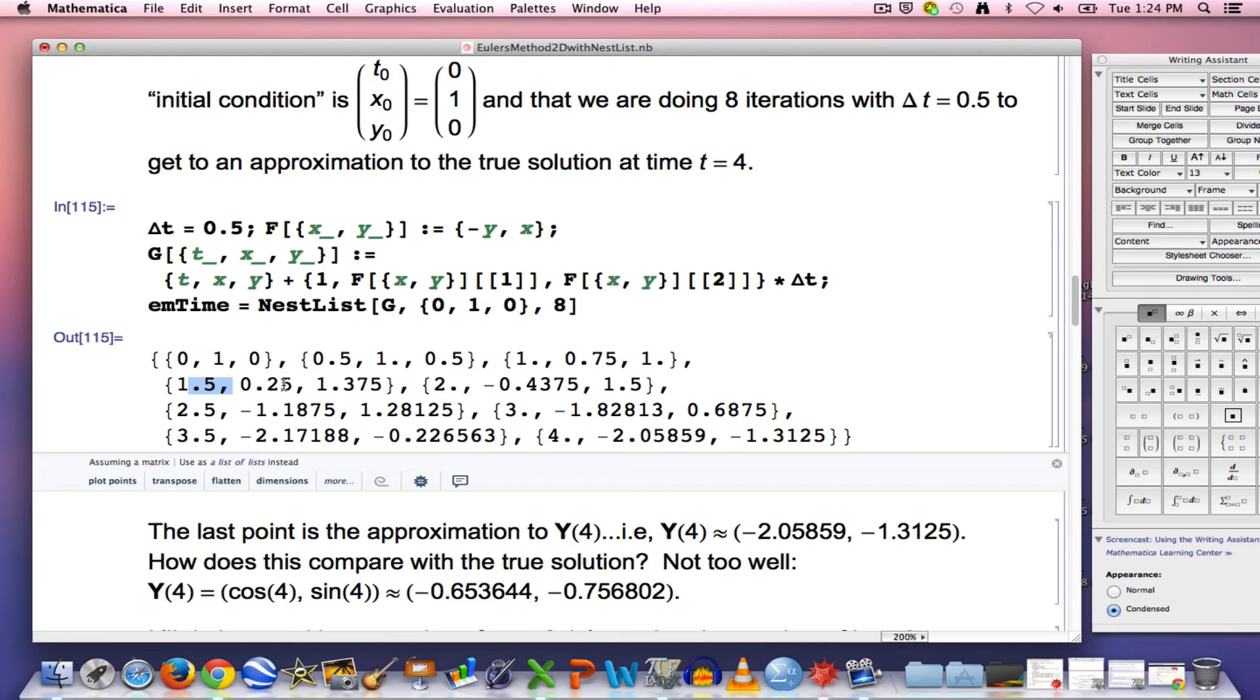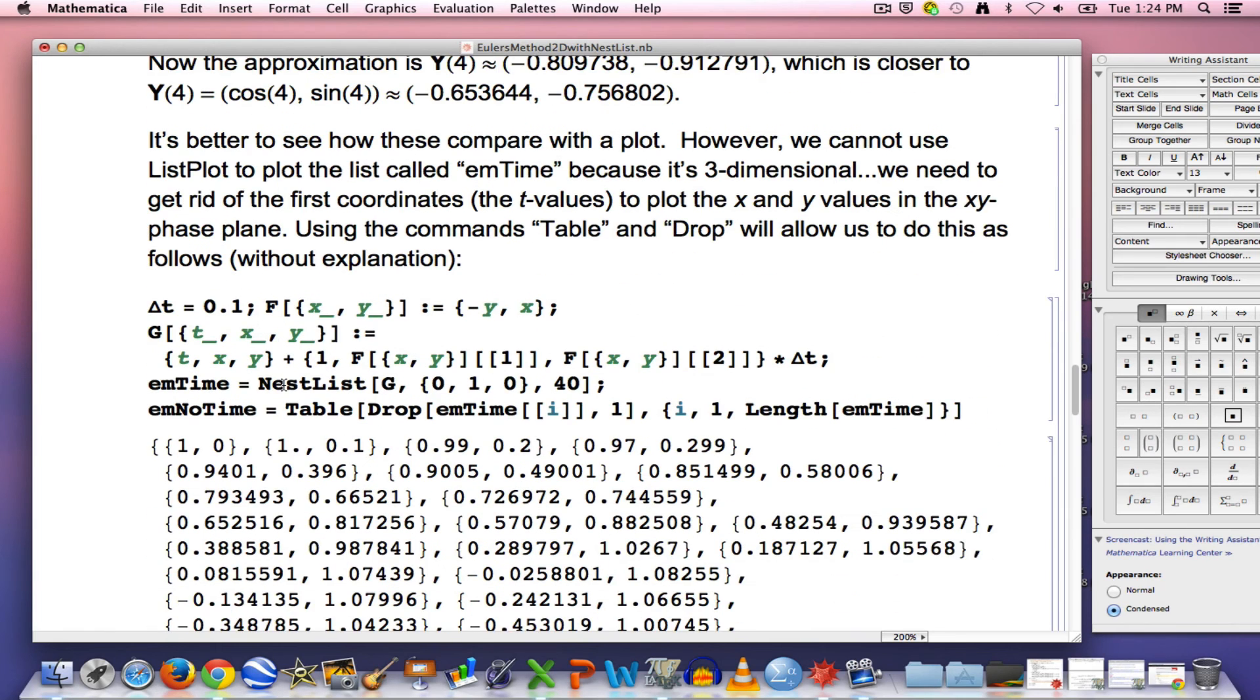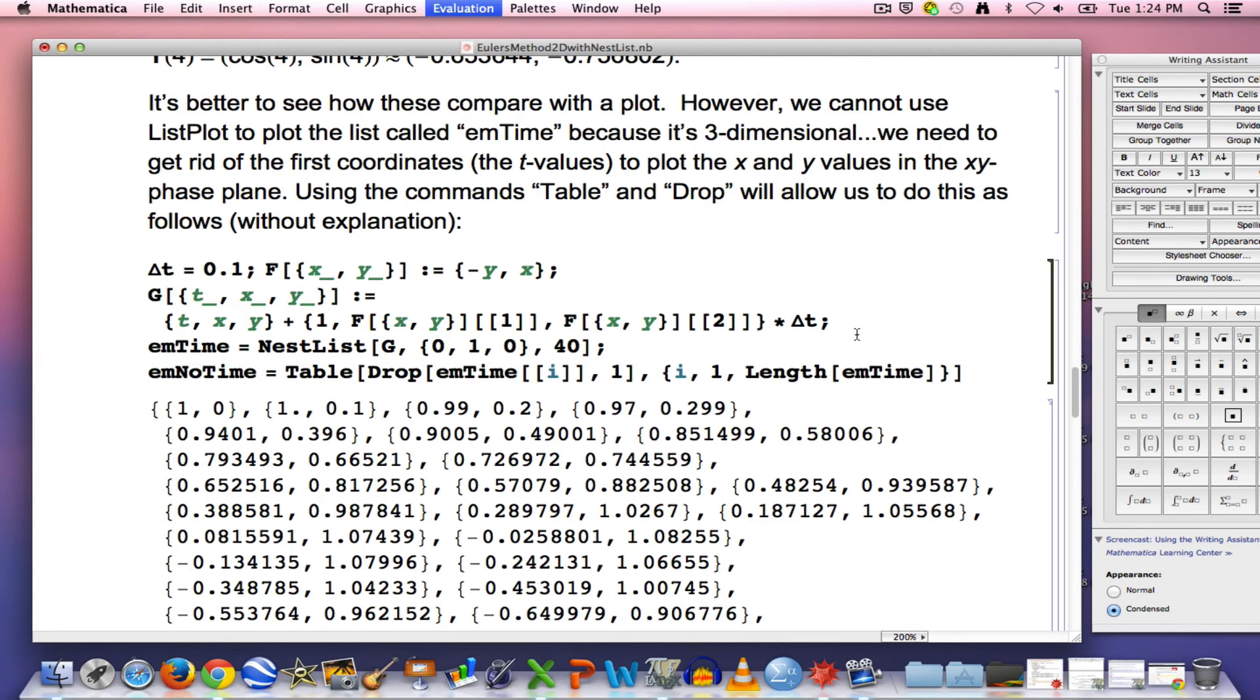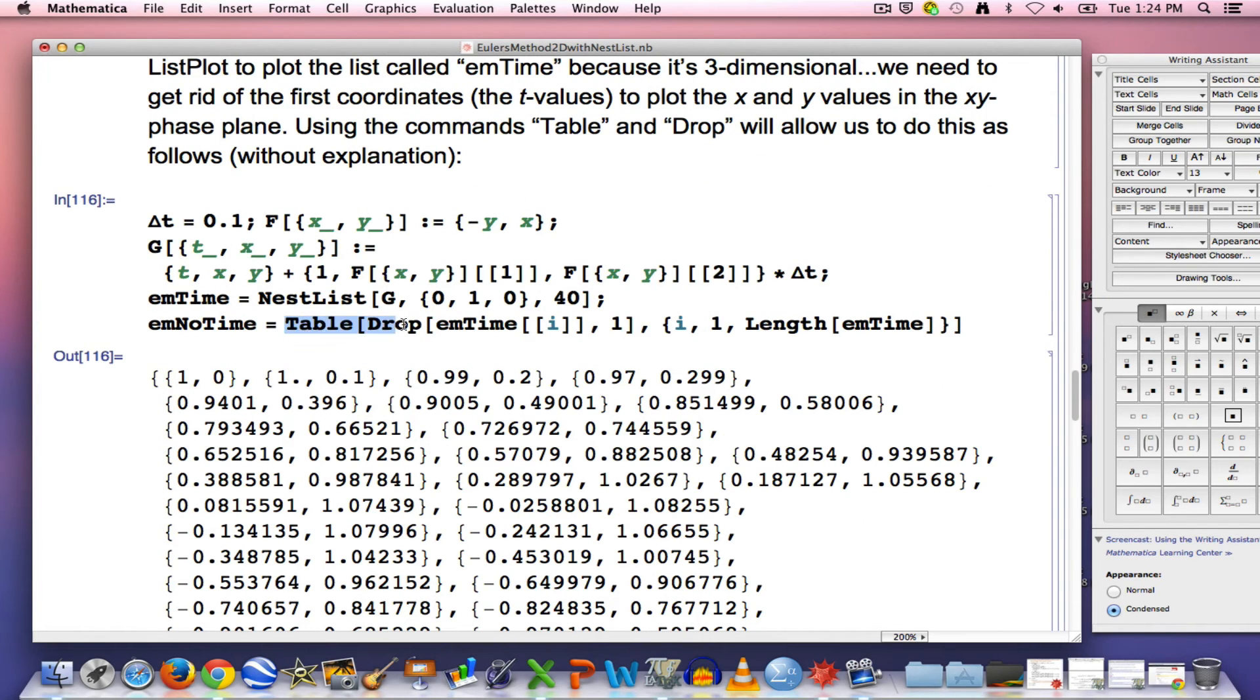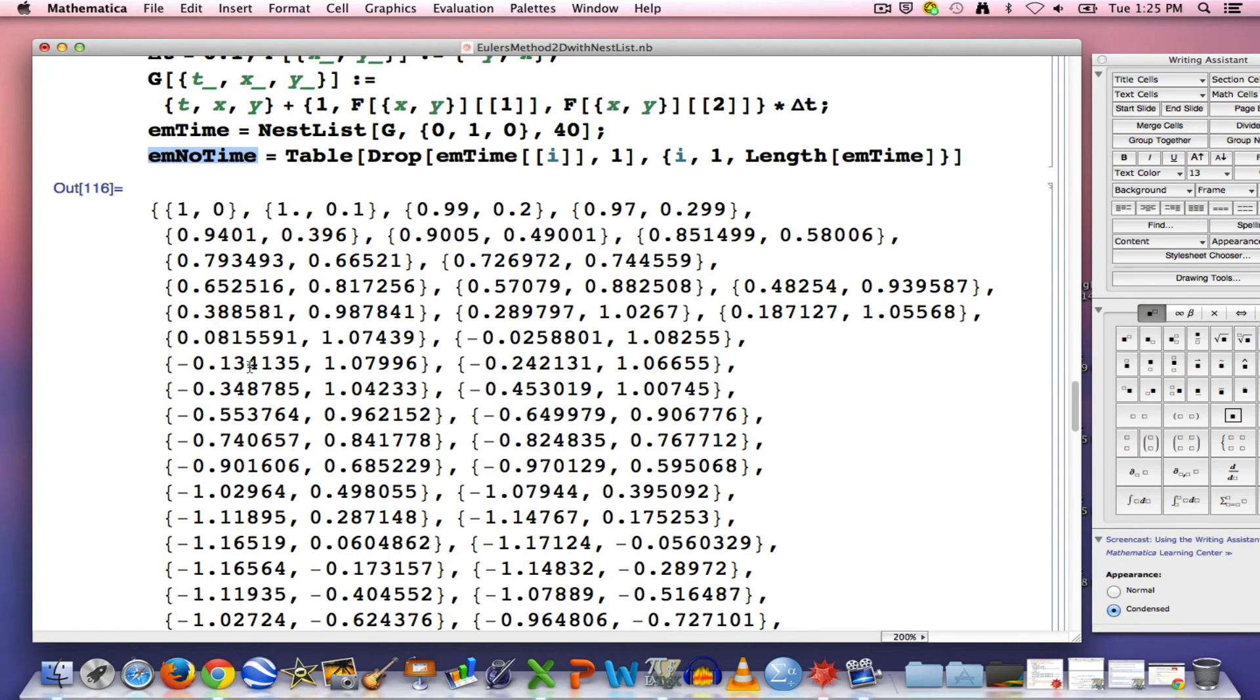If I'm going to plot it in the xy-plane, however, I've got to get rid of time, and that's where I ultimately go down to here and have this extra bit of code here that gets rid of the time coordinate. I won't take the time to explain how that works. I have a couple extra list operations for one very important one called table. Another one, drop, essentially, is what I'm using to drop the time component here, the first coordinate with that one. This length command will iterate this process through the length of EM time, however many points are in the list. This particular variable now has the points that are generated by Euler's method just in terms of the x and y coordinates, no time.